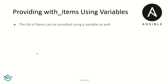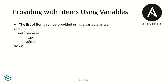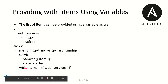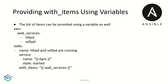If you have multiple variables, such as passwords, you can reference them. In previous videos, you will find the link to variables. You can define a variable called web_services with values http and vsftpd. If you want to call that key, you can use the with_items directive to call web_services and display the two values in the loop. This is using with_items with variables.